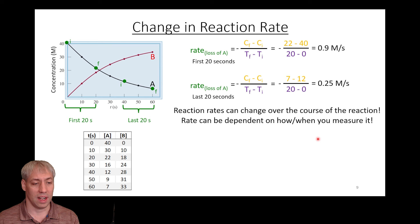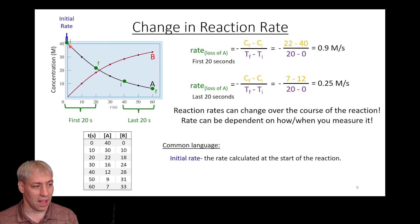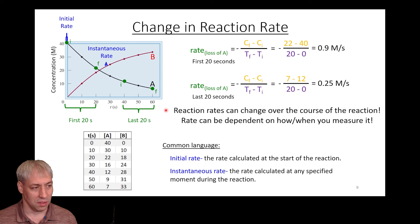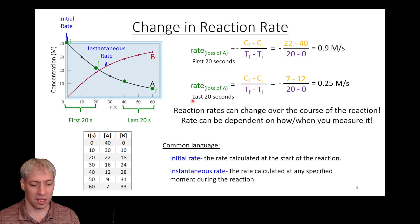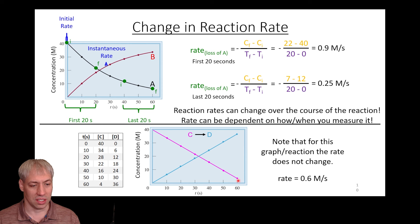To clarify how rates are measured, we use terms like initial rate — the rate calculated at the start of the reaction — and instantaneous rate, which is doing the same math at any point on the curve by making the time interval very small. For zero-order reactions, the rate of change is constant throughout the entirety of the reaction, so initial and instantaneous rates are always the same.